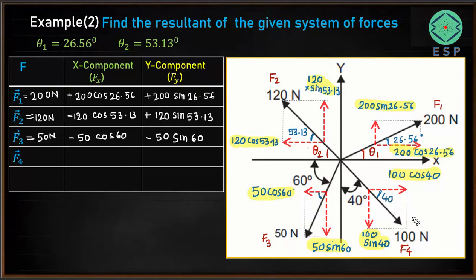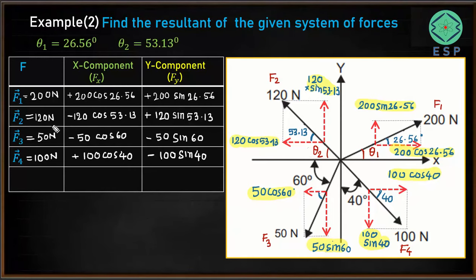For the last force, F4, which is 100 N: its x-component is +100 cos 40 (positive, acting in the positive x direction) and its y-component is −100 sin 40 (negative, acting downward). We have now listed all forces and their x and y components. The next step is to find the sum of all x-components and the sum of all y-components.